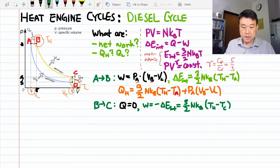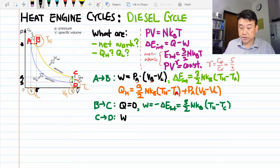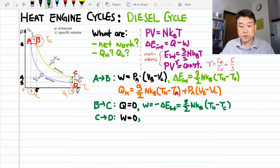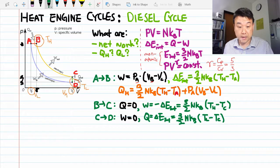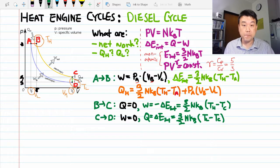Alright, checking along, isochoric cooling from C to D. So here the work done is zero. And all the heat transferred goes into changing the internal energy. Make sure this is negative because there's heat flowing out from the system for this step.